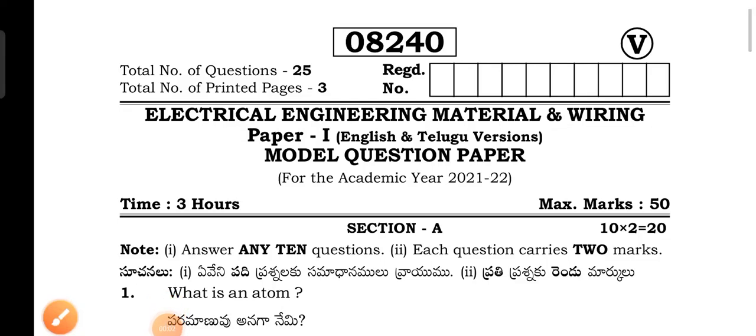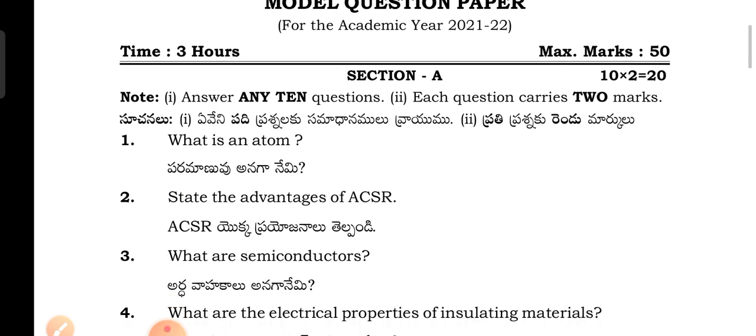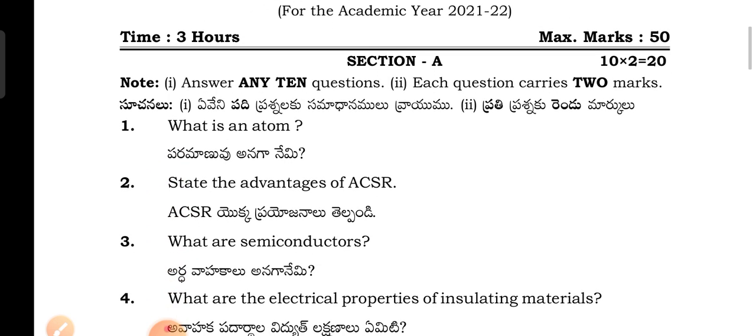Students, welcome back to Vichita Rashkamari YouTube channel. In this video I am going to show the model question paper for the Electrical Technician (ET) first year, Paper 2 — that is Electrical Engineering Material and Wiring — for the TS ET course. Okay, Section A: